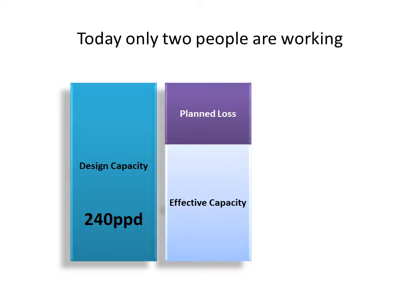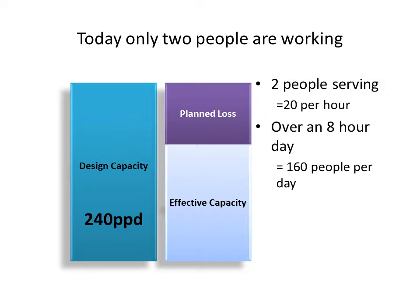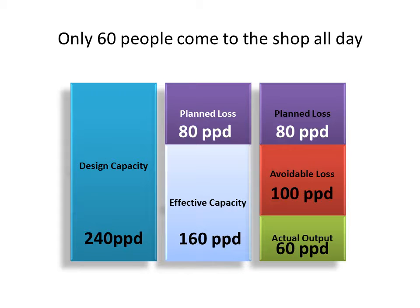Today, only two people are working. That means we can serve 20 people an hour, 160 people a day. That gives us our effective capacity of 160 people per day, and 80 people per day planned loss. If only 60 people come to the shop all day, there's our actual output of 60 people. We've got quite a large avoidable loss of 100 people per day, and our planned loss remains the same.